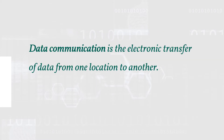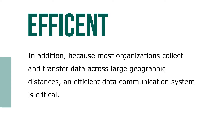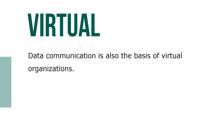Data communication is the electronic transfer of data from one location to another. An information system's effectiveness is measured in part by how efficiently it delivers information, and a data communication system is what enables an information system to carry out this function. Because most organizations collect and transfer data across large geographic distances, an efficient data communication system is critical.